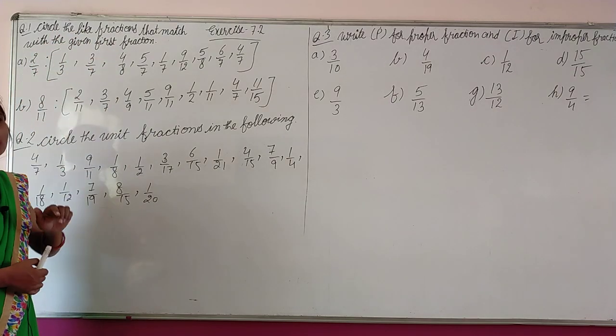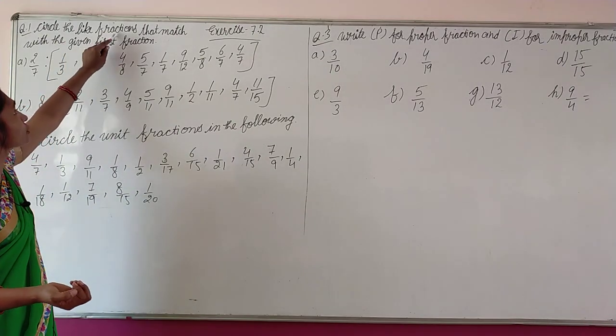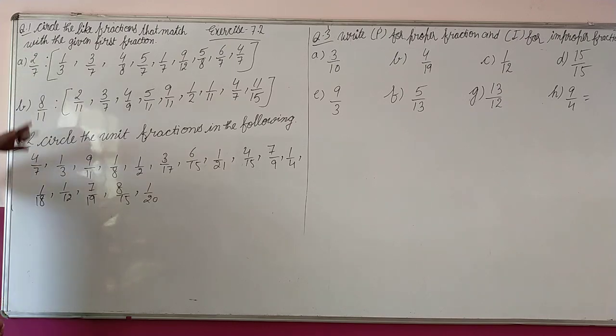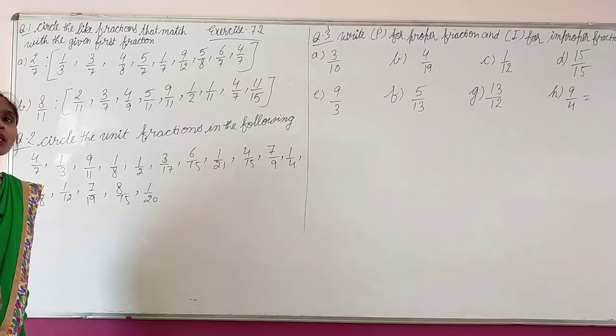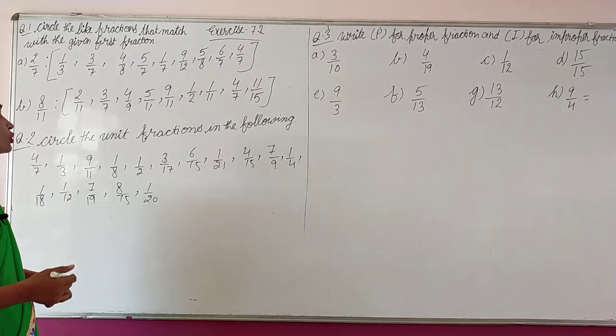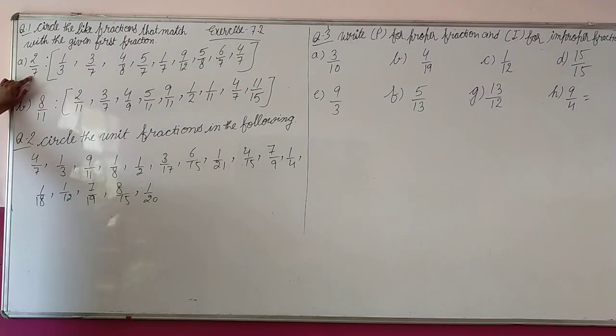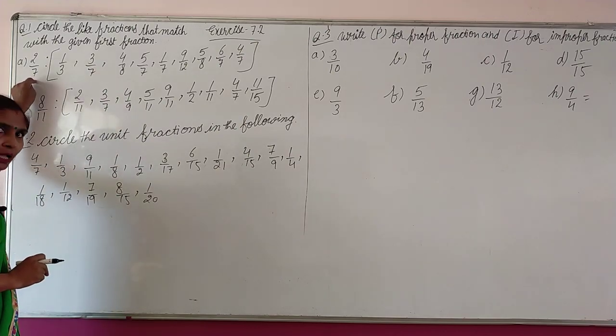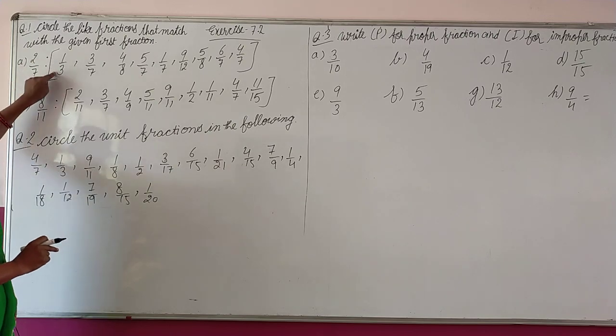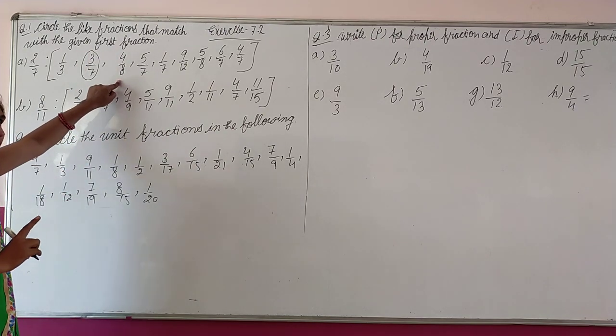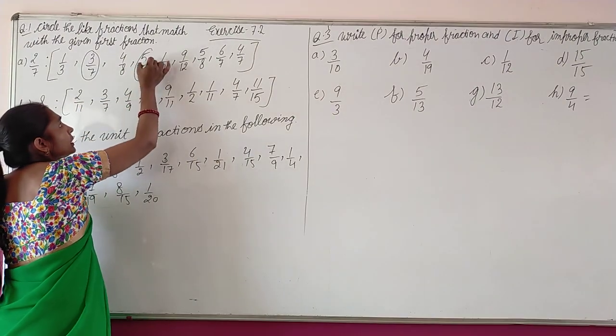Circle the like fractions that match with the given first fraction. Ki jo given first fraction hai, jo uske saath match kar rahe hai, usse jo like fraction hai, usse ko hume circle karna hai. Like fractions have the same denominator. Jiska denominator same hota, wahi like fraction hota na.